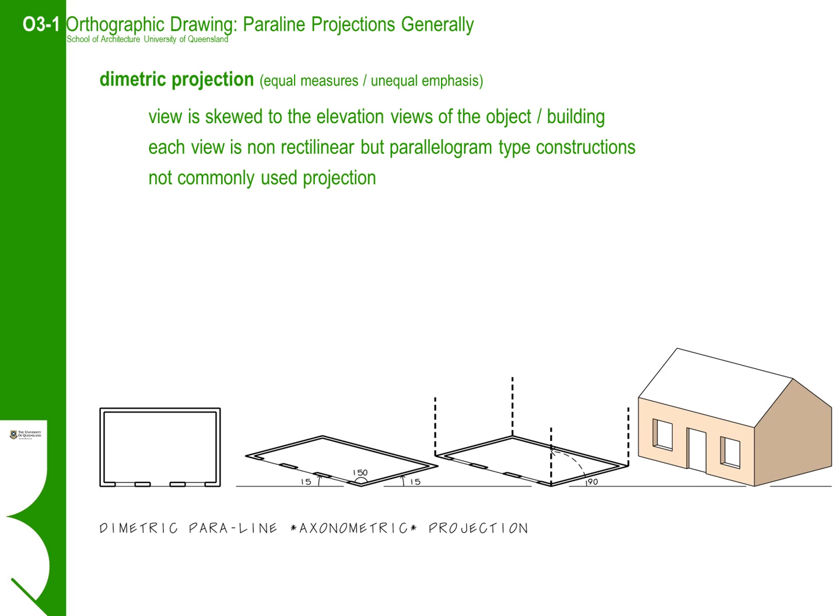The plus point of a diametric projection is that it moves the isometric view more towards a standing point of view, and with the angle being symmetrical, it is still easy to draw using one set square.